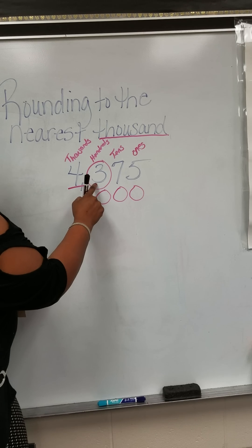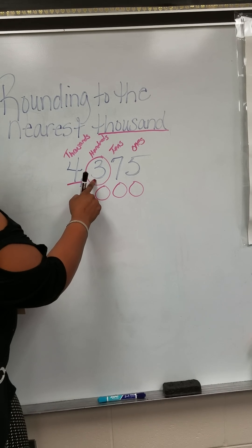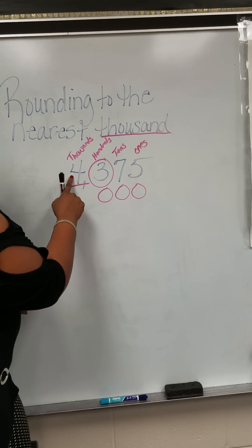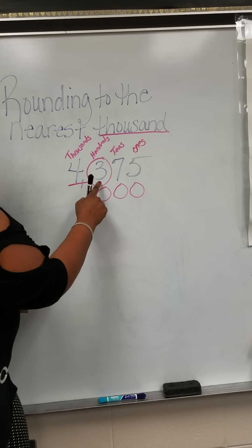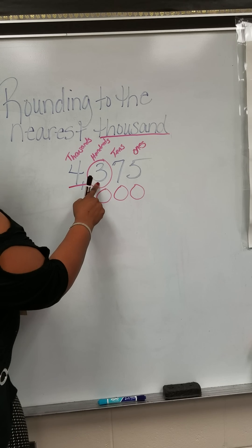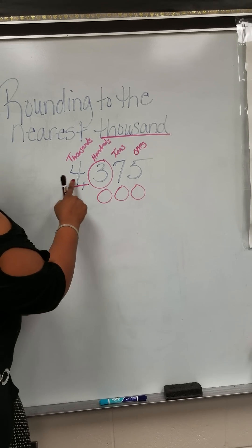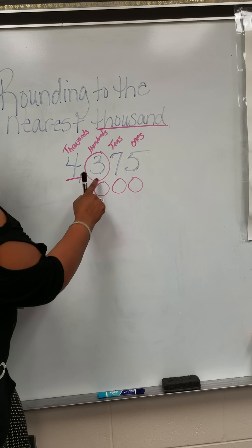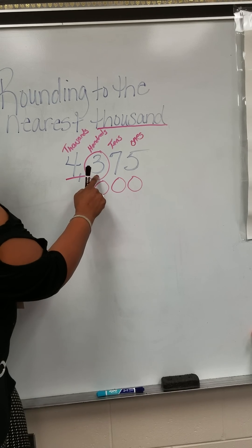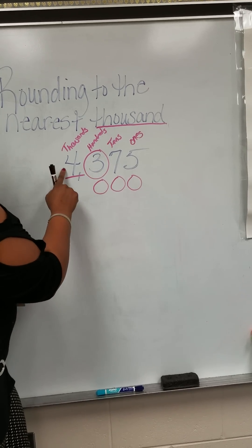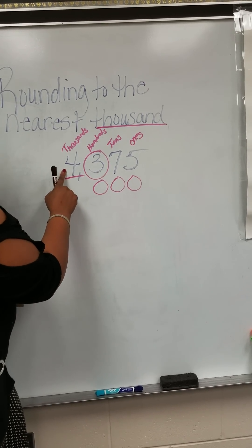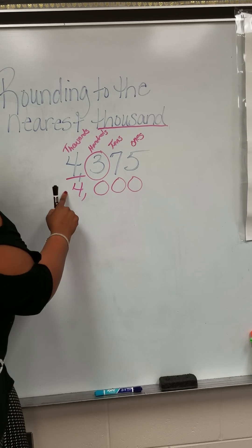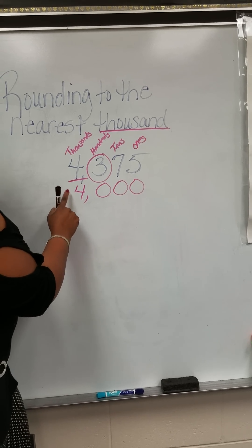If the circle number is five or more, the underlined number goes up one. If the circle number is less than five, the underlined number stays the same. In this case, the circle number is less than five, so the underlined number stays the same. So your rounded number is four thousand.